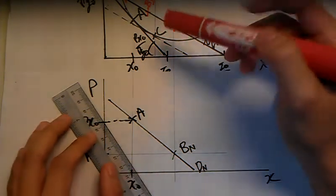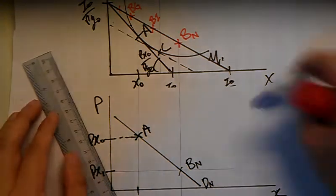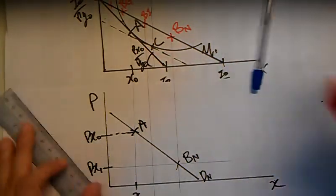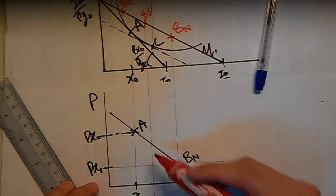What if B lies here and it's an inferior good? We do the same thing: vertical line down to P_X1.